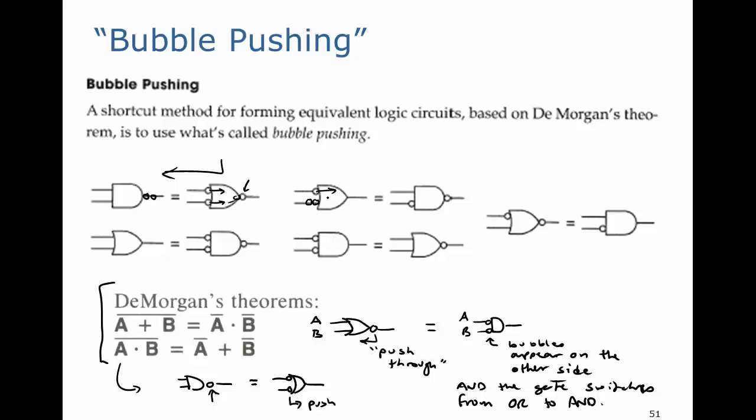Put a double bubble—there's no inversion at all. Push that one bubble through, and so the OR gate will become an AND gate with the bubble showing up at the output here, and this solid one I'll draw is left behind.